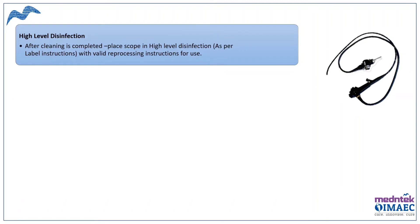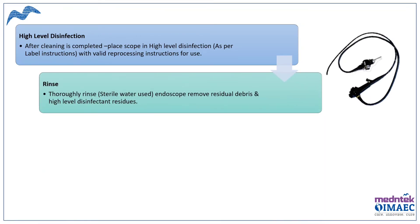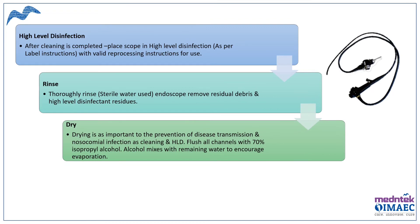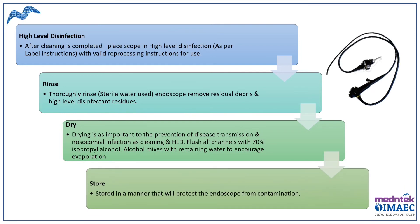After pre-cleaning, the next step is high-level disinfection, in which the endoscope is immersed in the high-level disinfectant according to the reprocessing instructions. Following high-level disinfection, the endoscope is rinsed with sterile water to remove residual debris or any residues of disinfectants. Next, drying is performed using 70% isopropyl alcohol, which acts as a dehydrating agent. Any moisture remaining in the endoscope facilitates the growth of microorganisms, making drying a critical step. After proper disinfection and drying, the endoscope is stored following proper protocols to avoid further contamination.